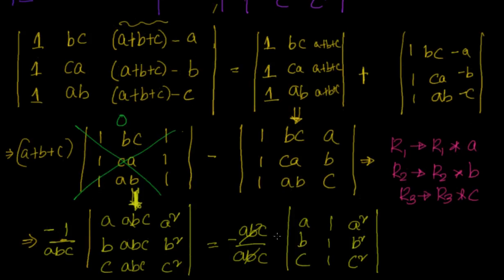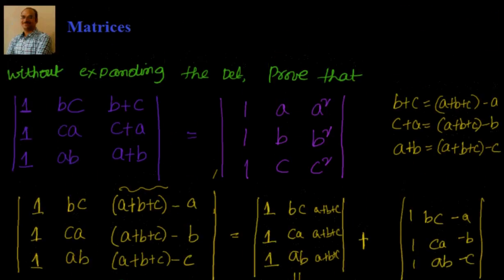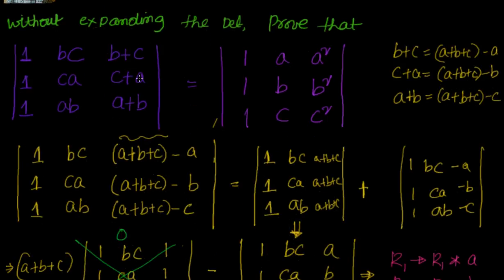Now what I need to prove is I need 1,1,1 in the first position. This ABC cancels out. If I want to move from here to here the sign will change so it will become plus and it will be nothing but what we need, that is 1, A, A², 1, B, B², and 1, C, C².